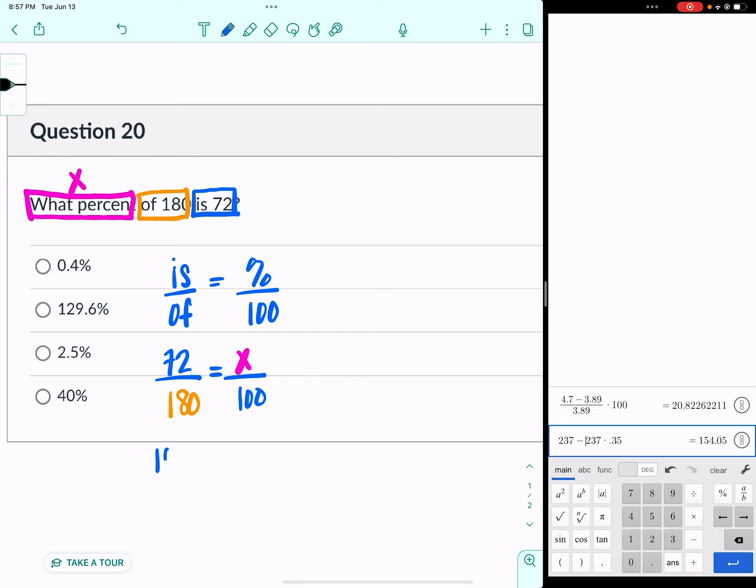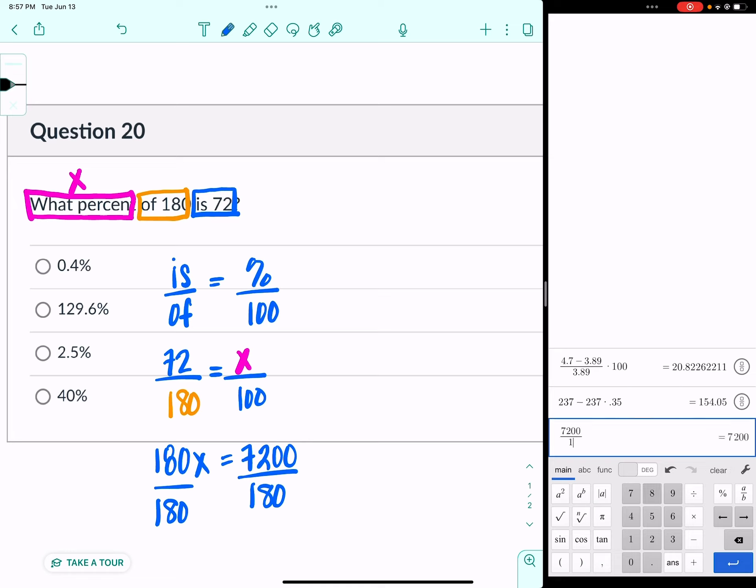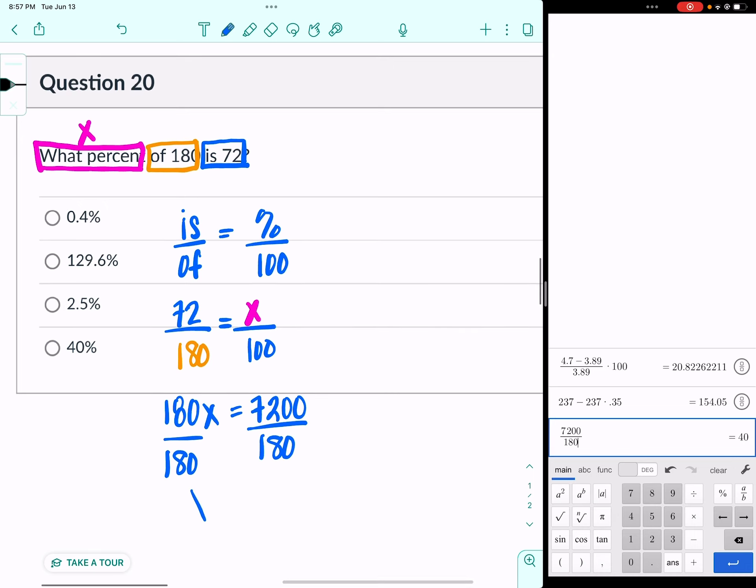Then we cross multiply. So I would have 180x equals 7,200. I know better than to try to do that in my head. So I'm going to divide both sides by 180, but I'm going to do the actual math in the calculator. And I get that my percentage is 40 percent.